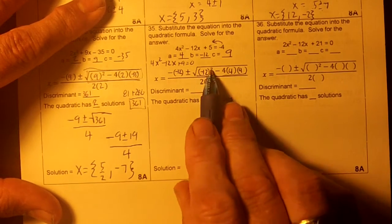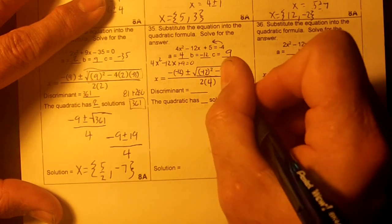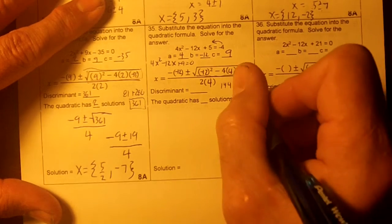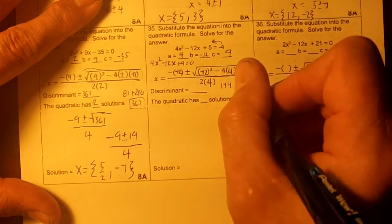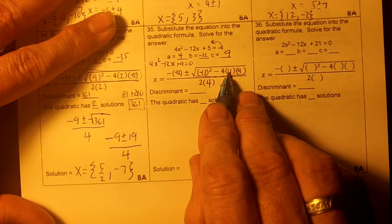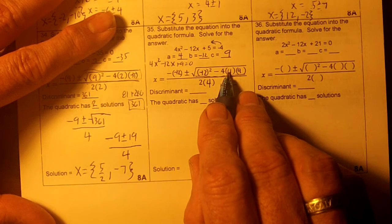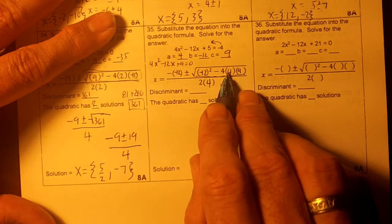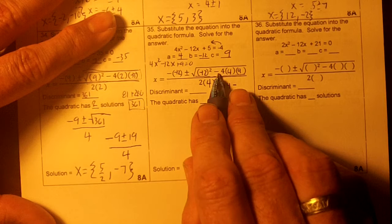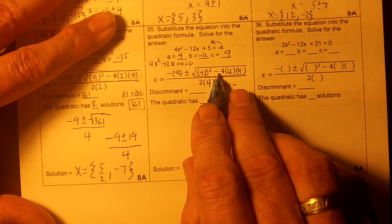So I'm going to do this down here. Negative 12 times negative 12 is 144. And then there's only one negative over here, right? So I'm going to put a negative. 4 times 4 is 16, and 16 times 9, or let's do 36 times 4.